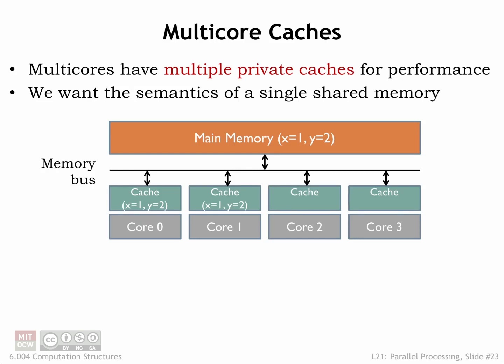A conceptual schematic for a multi-core processor is shown below. To reduce the average memory access time, each of the four cores has its own cache, which will satisfy most memory requests. If there's a cache miss, a request is sent to the shared main memory.